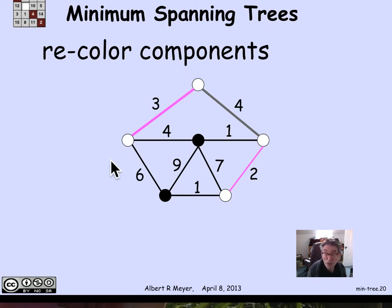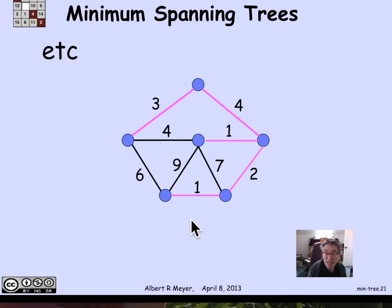We find the minimum weight gray edge again. There are two ties for minimum, both weight 1. I proceed in this way and wind up with the minimum weight spanning tree. That's the procedure.